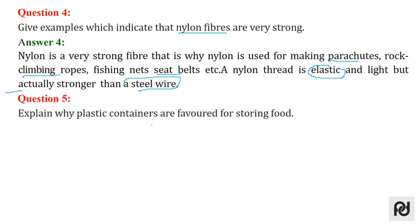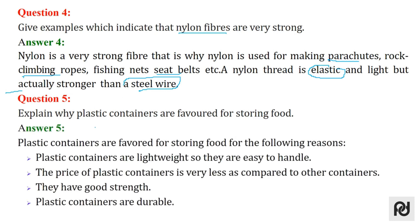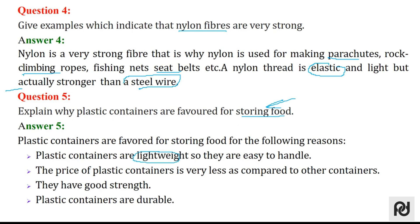Question 5: explain why plastic containers are favoured for storing food. Plastic containers are light in weight and easy to handle. The price of a plastic container is very less compared to other containers, and they have good strength and are durable.